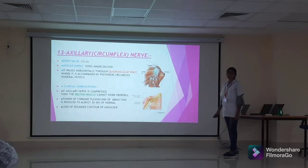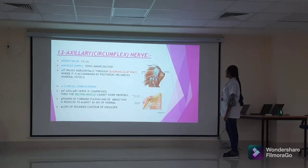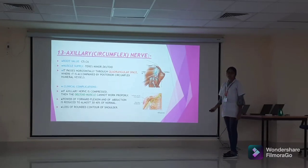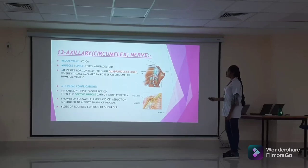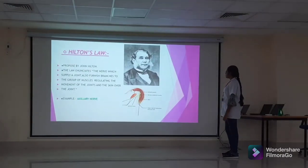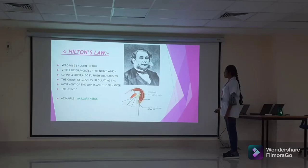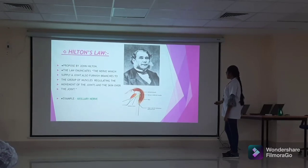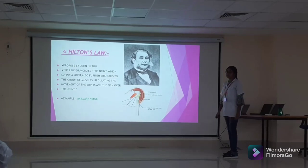The axillary or circumflex nerve passes horizontally through the quadrangular space, accompanied by the posterior circumflex humeral artery. It mainly supplies the teres minor and deltoid muscles. Clinically, if the axillary nerve is injured, the deltoid muscle cannot work properly; the power of forward flexion is lost and abduction is reduced to about 30-40% of normal, with loss of the rounded contour of the shoulder. The axillary nerve is a classical example of Hilton's law, furnishing branches to the muscles regulating movement of a joint and to the skin over the joint.